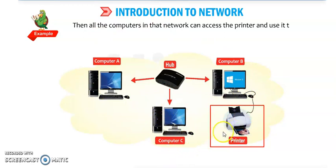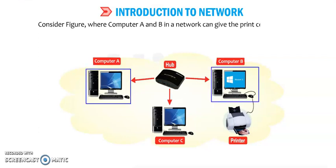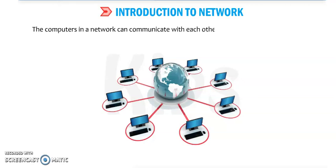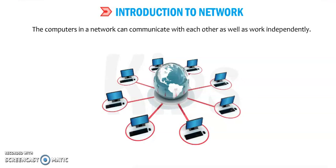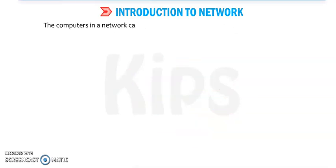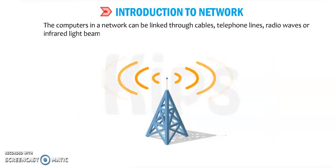When we give a print command from computer A, it can print using the printer connected to computer B or C. Computers A and B in the network can give the print command to the printer attached to computer C. The computers in the network can communicate with each other as well as work independently. Each computer in the network is called a node. Computers in the network can be linked through cables, telephone lines, radio waves, or infrared light beams.